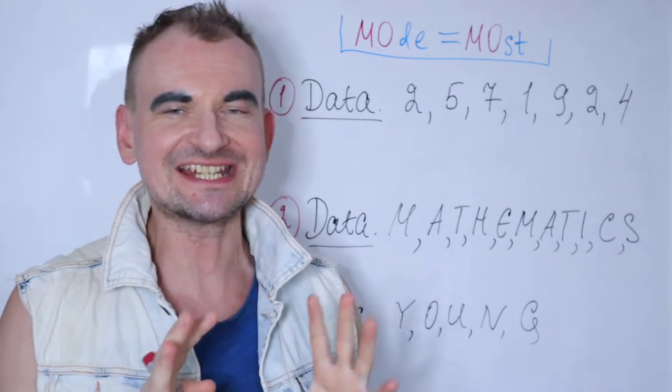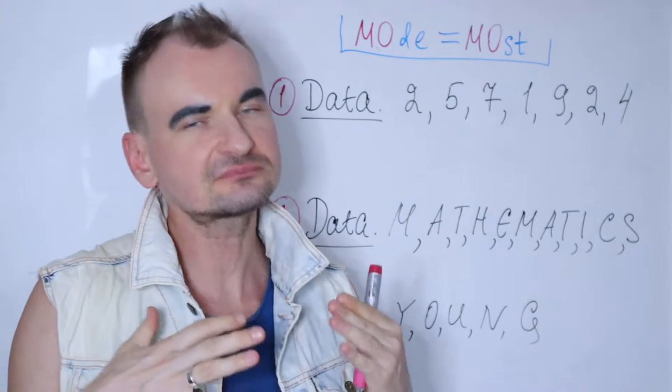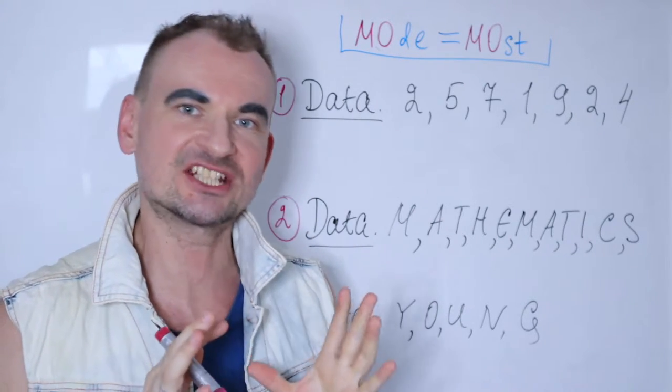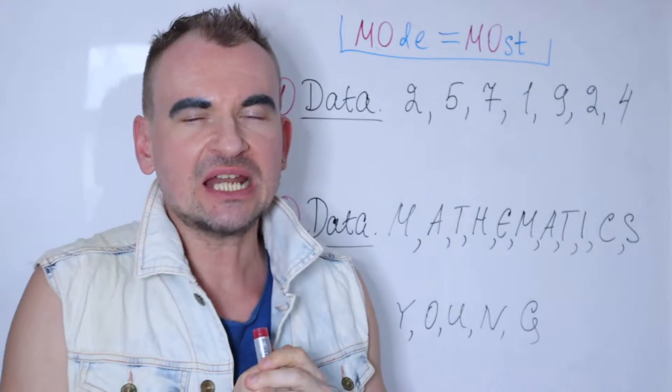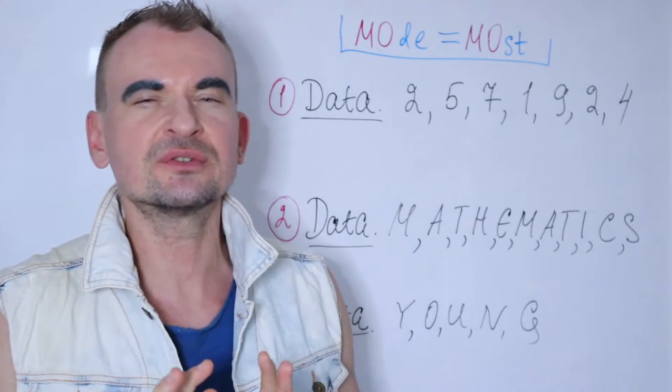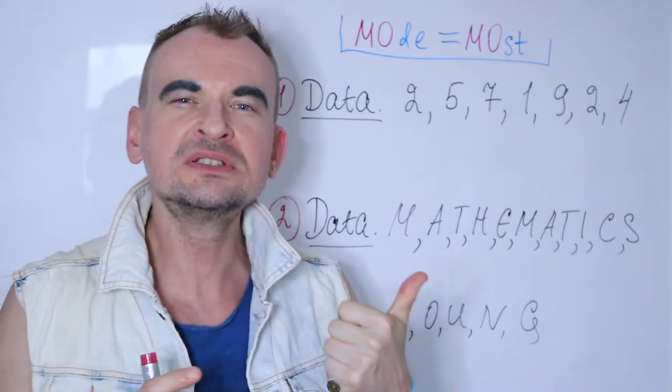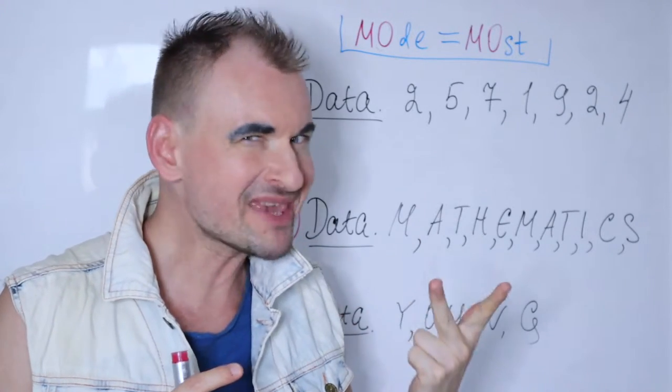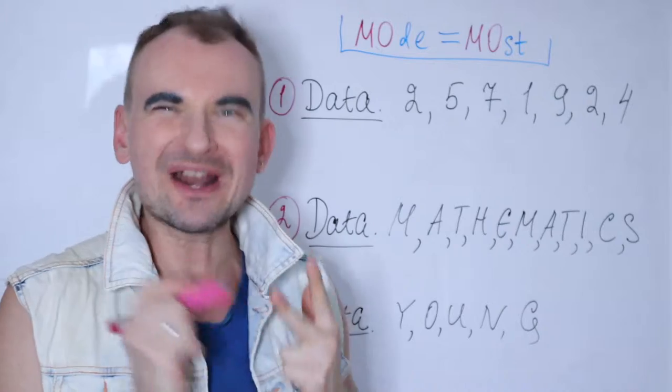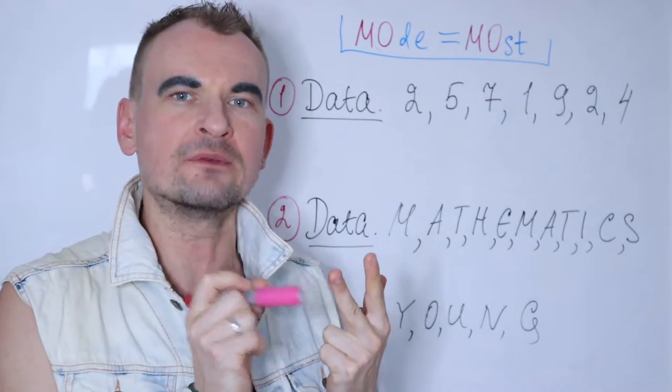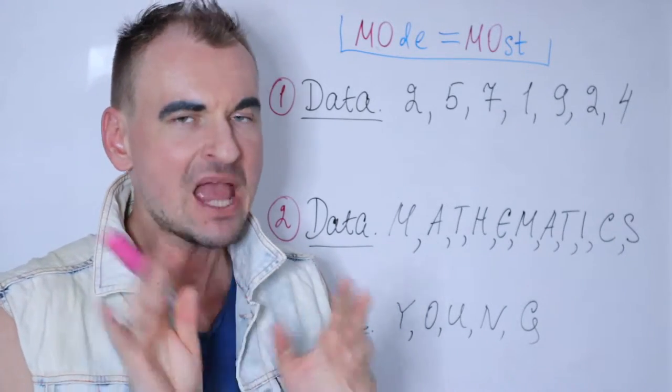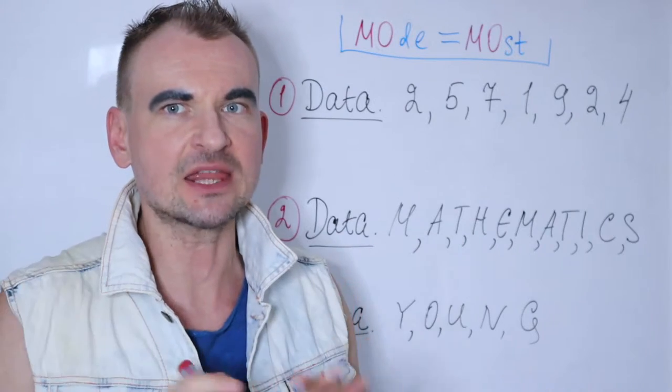It usually comes to three M's - I call them 3M. It's mode, median, and mean. Also range goes along with this 3M, but that's completely another story and that's coming up.